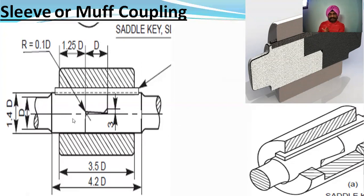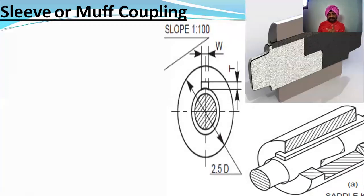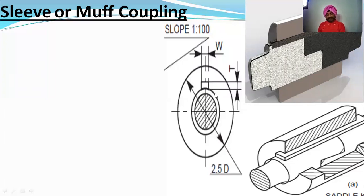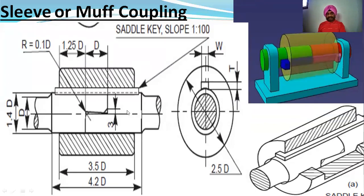The side view will be all circles on the center line: one circle for the shaft diameter, one for the projection, and one for the hub diameter. The key is shown as a rectangle on top. The key length is 2.5D. If using a saddle key or gib head key, dimensions are: width = D/4, thickness = D/6, and height = D/4.